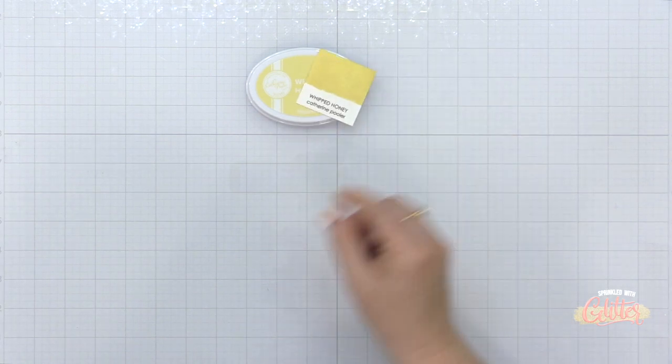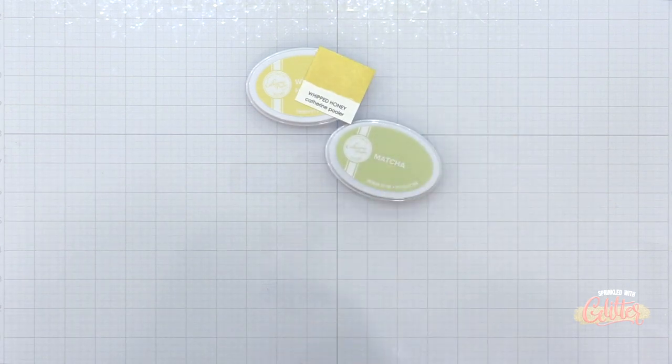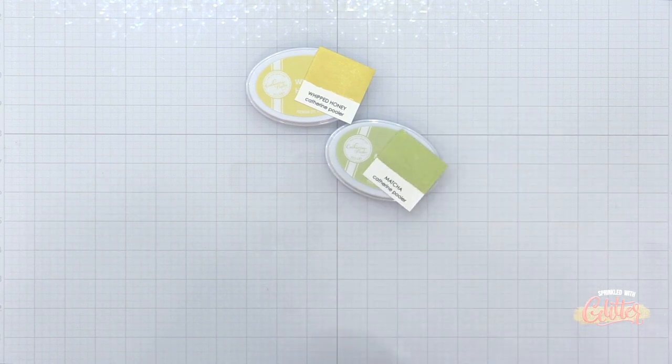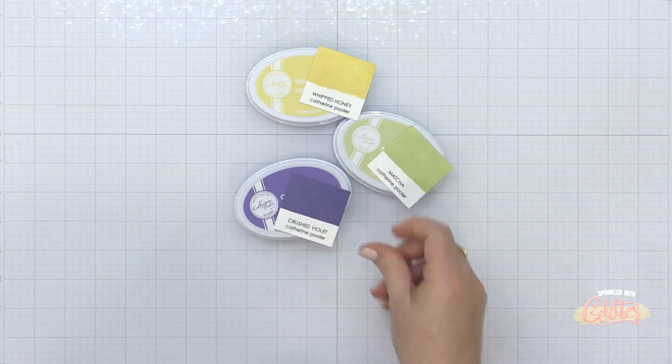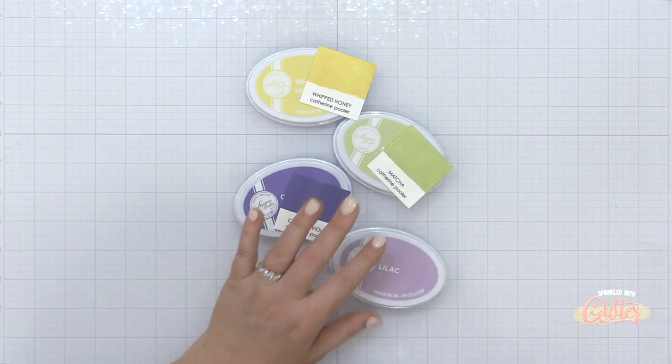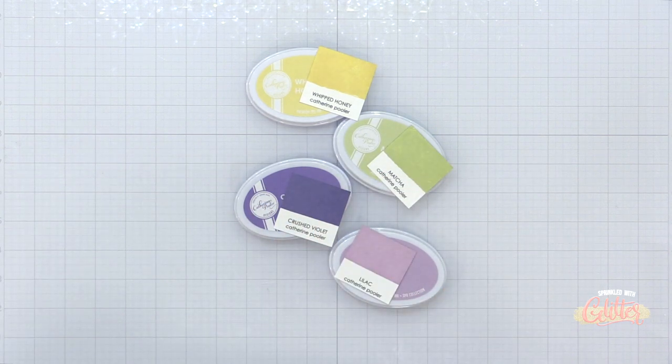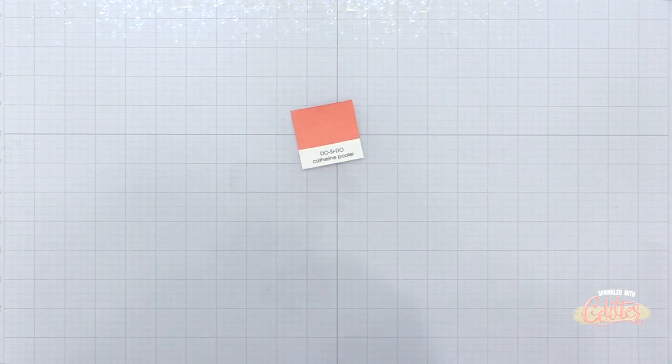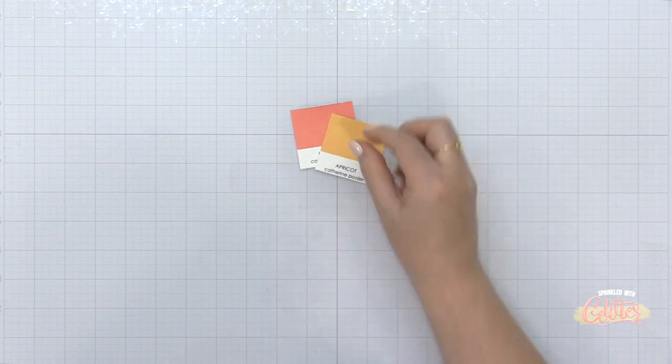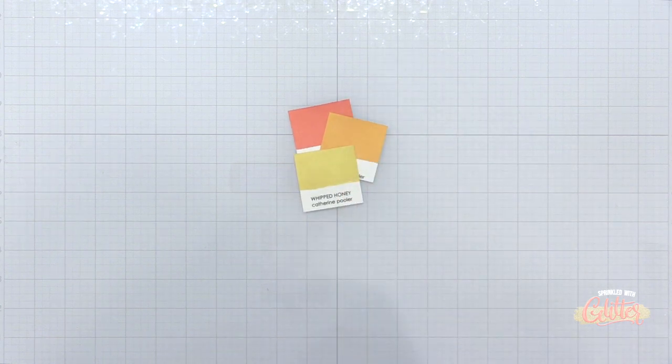So here's a look at the inks again, along with the swatches after they've dried back. I have the whipped honey and then the matcha. You can see these are really great smooth stamped results. And I only stamped each of these colors once. Now with the foam ink pads, they transfer ink beautifully, especially with direct to paper, but keep in mind, you may have to re-ink them more often than a felt ink pad.